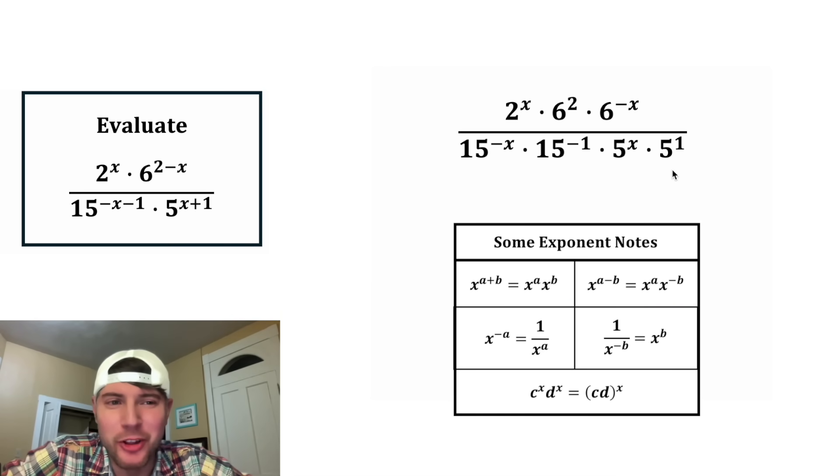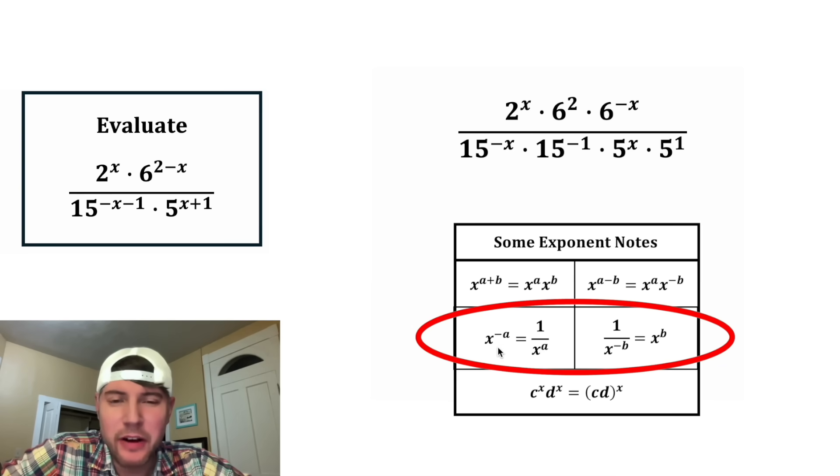Next, we can clean up all the negatives. Here's the notes right here. If you ever have a negative on top, where you have x to the negative a, you can rewrite that as 1 over x to the a. And if you ever have a negative exponent on bottom, like 1 over x to the negative b, you can rewrite that as x to the b.